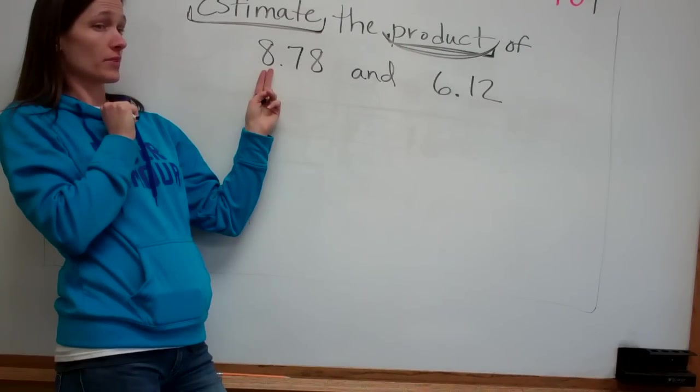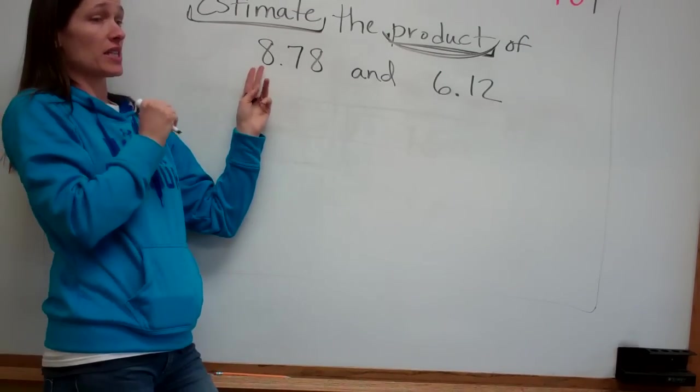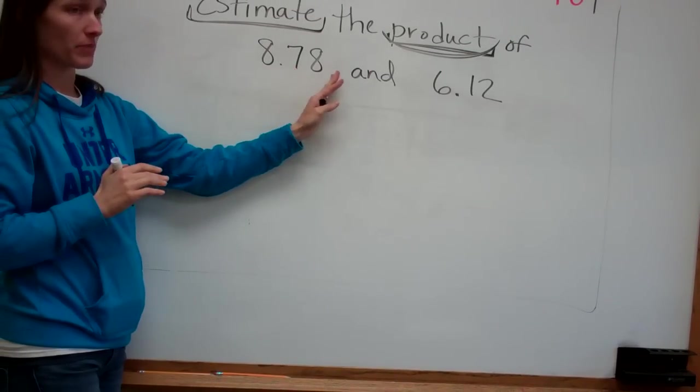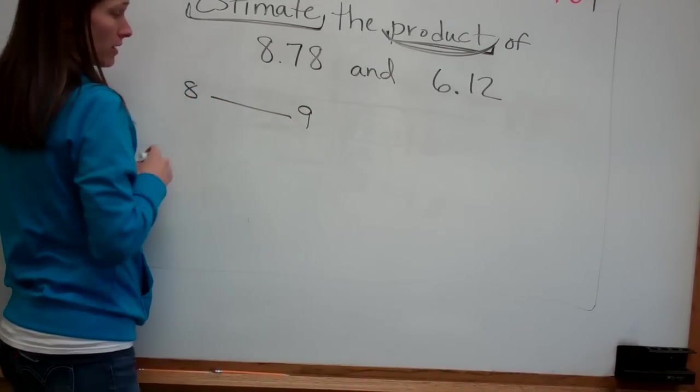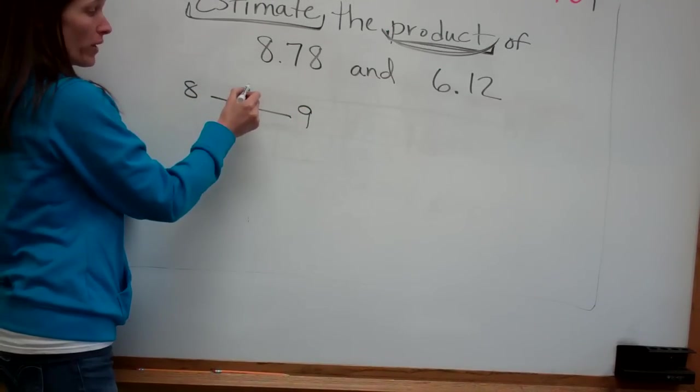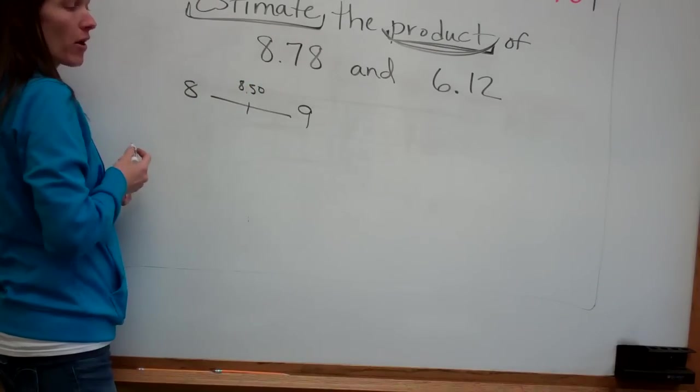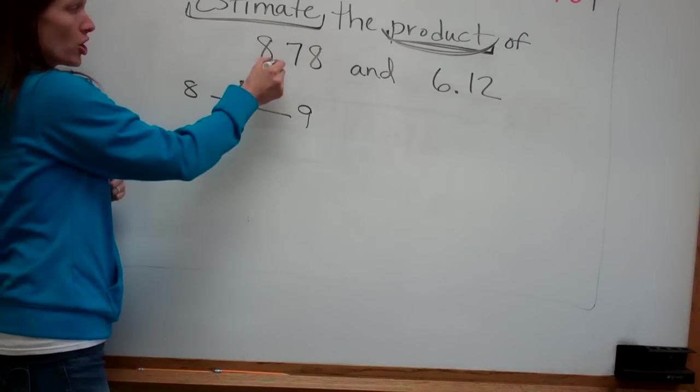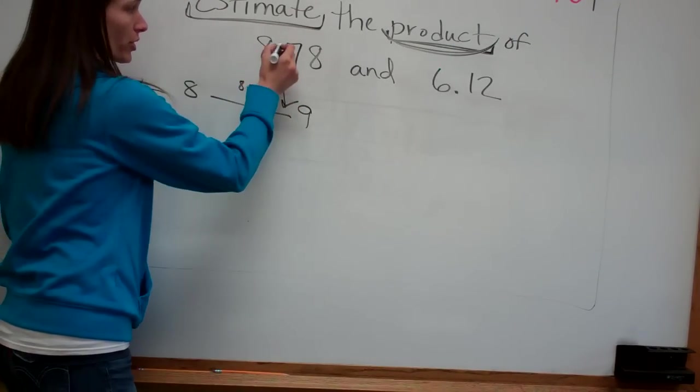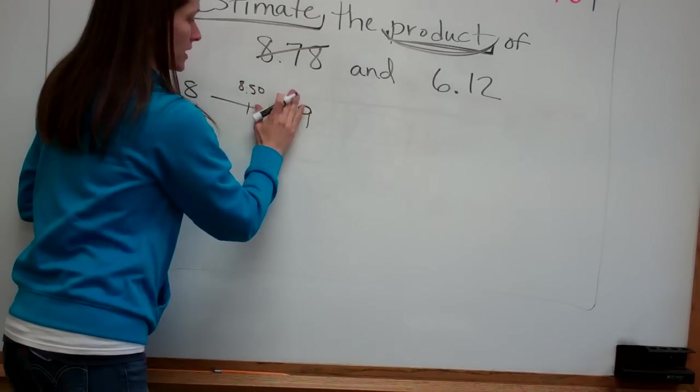It is in between 8 and 9. It'd be 9. Because it's past 8, it's 8 and something. So it's in between 8 and 9. 9. And .50, 8.50 would be in the middle, right? Yeah. So it'd be 9. So it'd be closer to 9. So we're going to change this to 9.